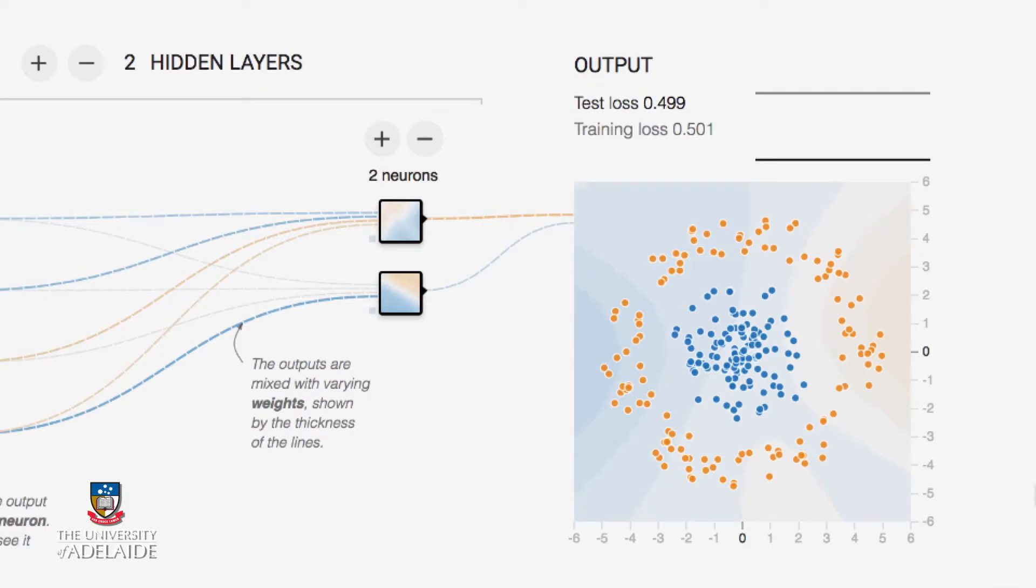Now, this network currently has random weights, and so it's producing some output. And the whole of the output region here, which is this square, is color-coded as to what the network thinks dots or data points in that region of the output space ought to be classified as. So, at the moment, it doesn't make a terrible lot of sense. And we can see that we've got here that the test loss and the training loss, which is basically the errors made by the network on the test data and the training data, is roughly 50%, which is what you'd expect from random effects of setting up the weights to random values, random choice, flipping a coin, about 50%.